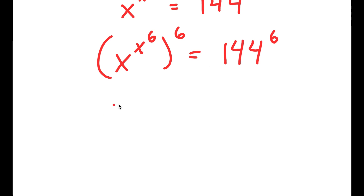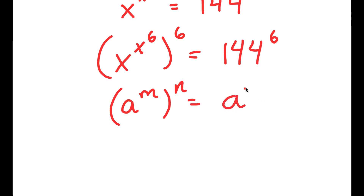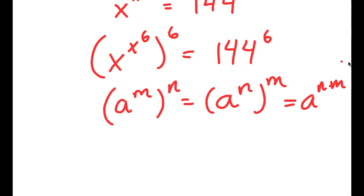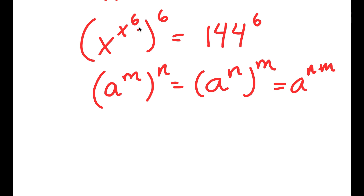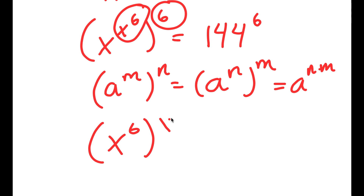If I have something in the form a to the power of m to the power of n, this is equal to a to the power of n to the power of m, and this is the same thing as a to the power of n times m. So x to the power of x to the power of 6, to the power of 6 — I can switch these two places. So now I have x to the power of 6 to the power of x to the power of 6, is equal to 144 to the power of 6.